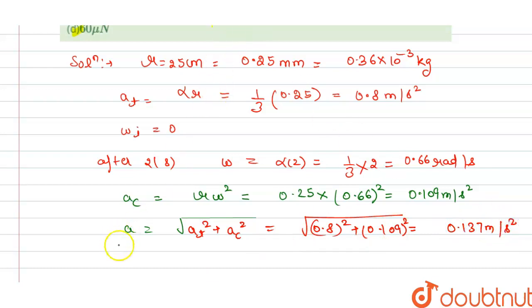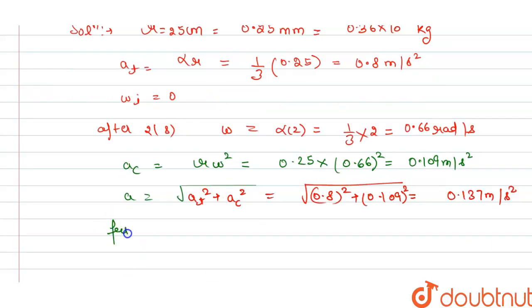And now we can find the frictional force. Frictional force f equals m a, mass into acceleration. m is 0.36 in kg, and acceleration is